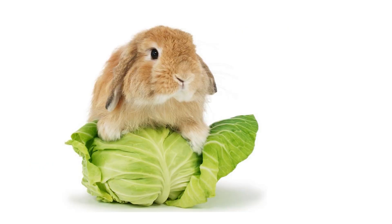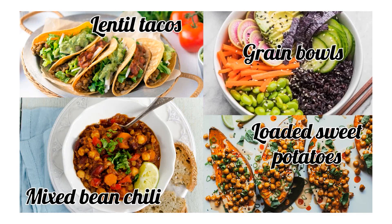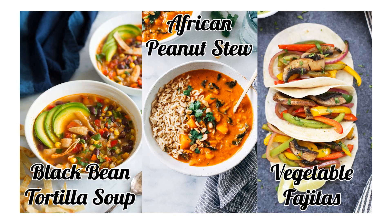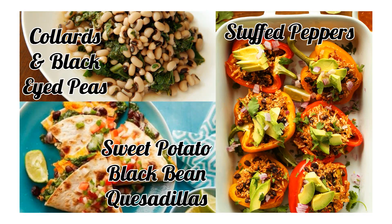So what should you eat? This is not a lettuce-and-tomato diet — not a rabbit food diet. A lot of people think plant-based means vegetable-based, and then they're set up for failure. You cannot sustain yourself on lettuce, tomatoes, and vegetables alone. Here's what it actually looks like: lentil tacos, mixed bean chili, grain bowls, loaded sweet potatoes, African peanut stew, black bean tortilla soup, vegetable fajitas, spinach and mushroom grits, vegetable tamales, rice and beans, collards, black-eyed peas, sweet potato black bean quesadillas, stuffed peppers.